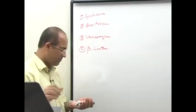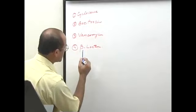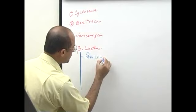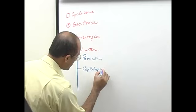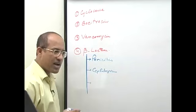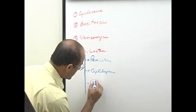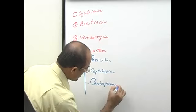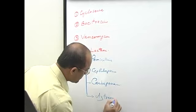In the beta-lactam group of antibiotics, there are four very important members: penicillin, cephalosporins, the imipenem group which is basically the carbapenems, and aztreonam. Out of all this group, the very commonly used are the penicillin group and the cephalosporin group, and in certain situations other drugs are also used.